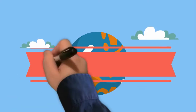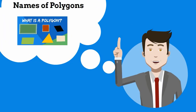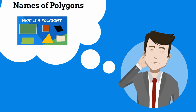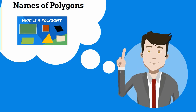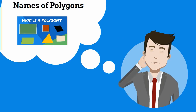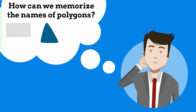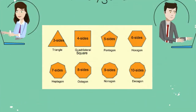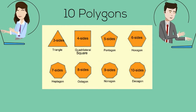Welcome to MooMooMath and Science. In this video I would like to talk about the names of polygons and how to memorize them. A polygon is a two dimensional geometric shape with at least three straight lines and three angles. How do you memorize the names of these polygons and how many sides does each shape have? Let's go through the first ten polygons and talk about some tricks for memorizing each plane shape.